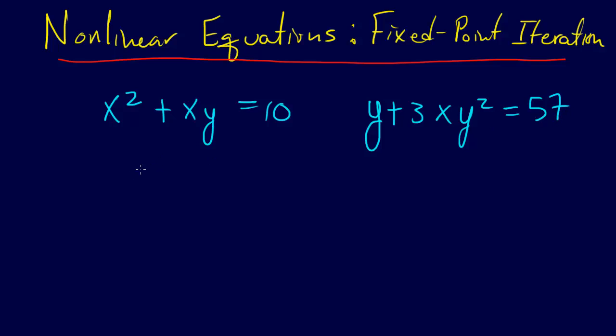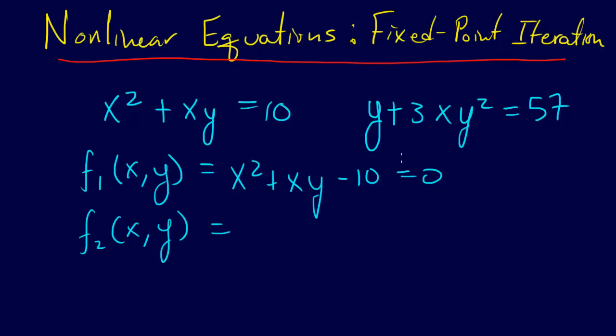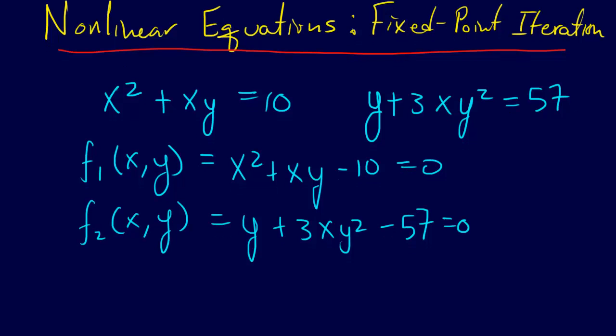Alright, so here's a couple of equations and we can separate them. We can say F1 of xy is equal to x squared plus xy minus 10 equals 0. We can do the same thing with this other one. Call it F2 of xy equals y plus 3xy squared minus 57 equals 0. Alright, so we're set now and we can apply the approach.